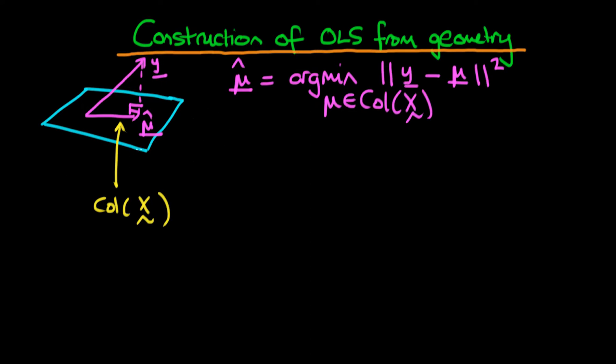We've already discussed that mu hat equals X times beta hat when our matrix of independent variables has full column rank. In this video, I want to show how we can actually construct the estimator beta hat.